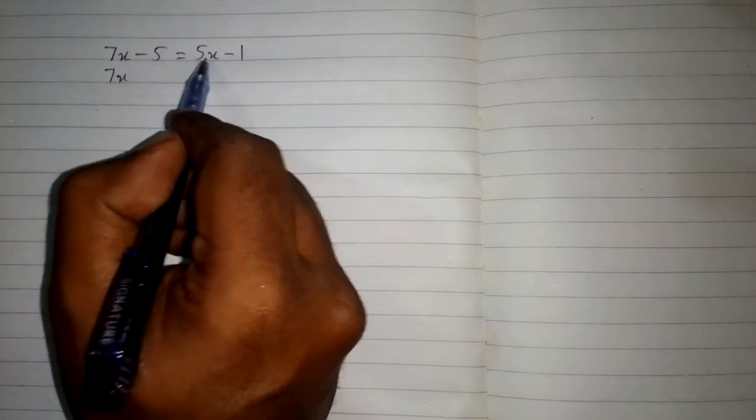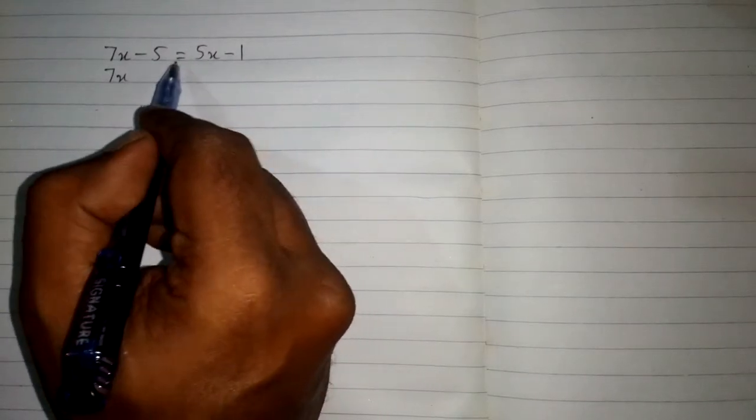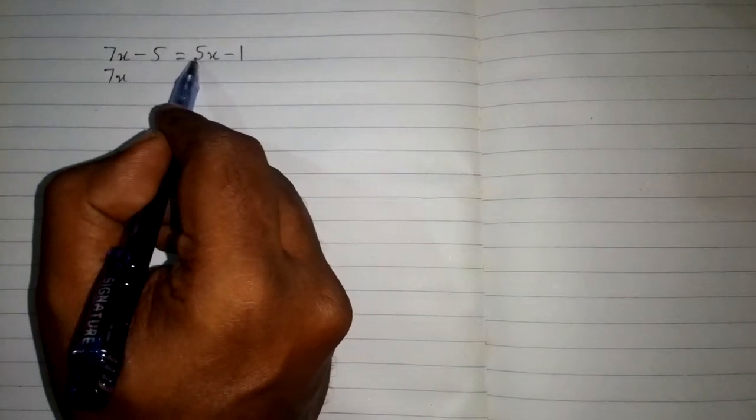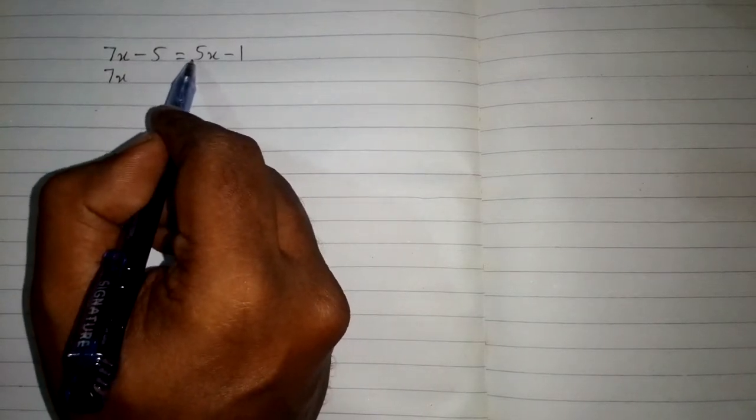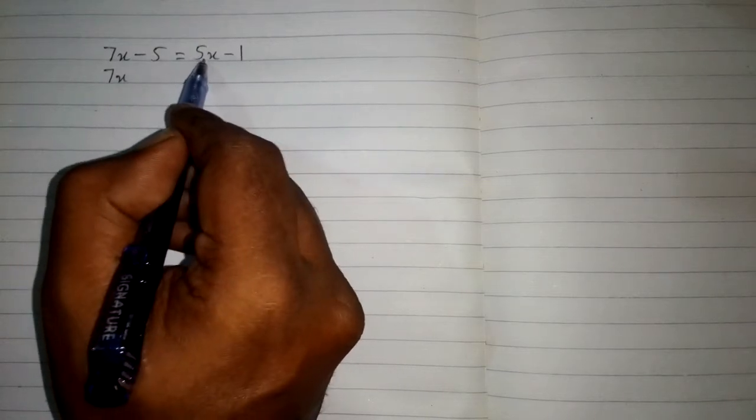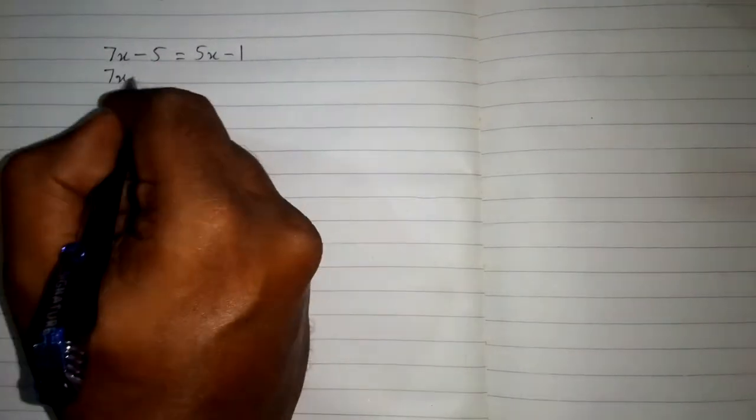So we can take this 5x from this side to this side. Since 5x is plus 5x, because there is no sign with 5x so we can consider this as plus 5x, when plus 5x can be written on the other side, this plus 5x will become minus 5x.